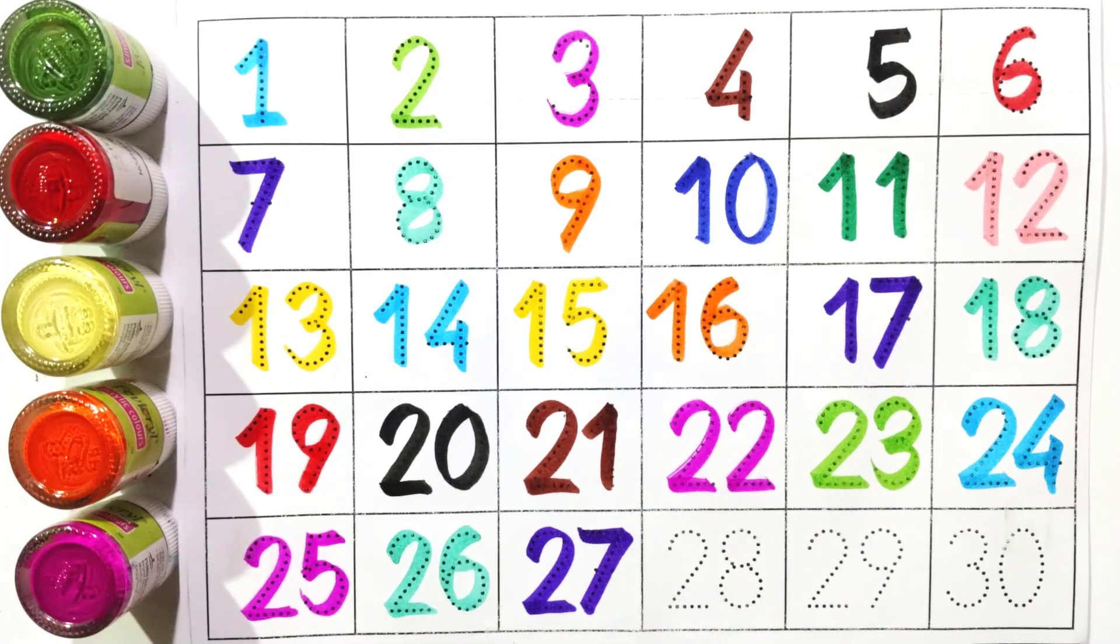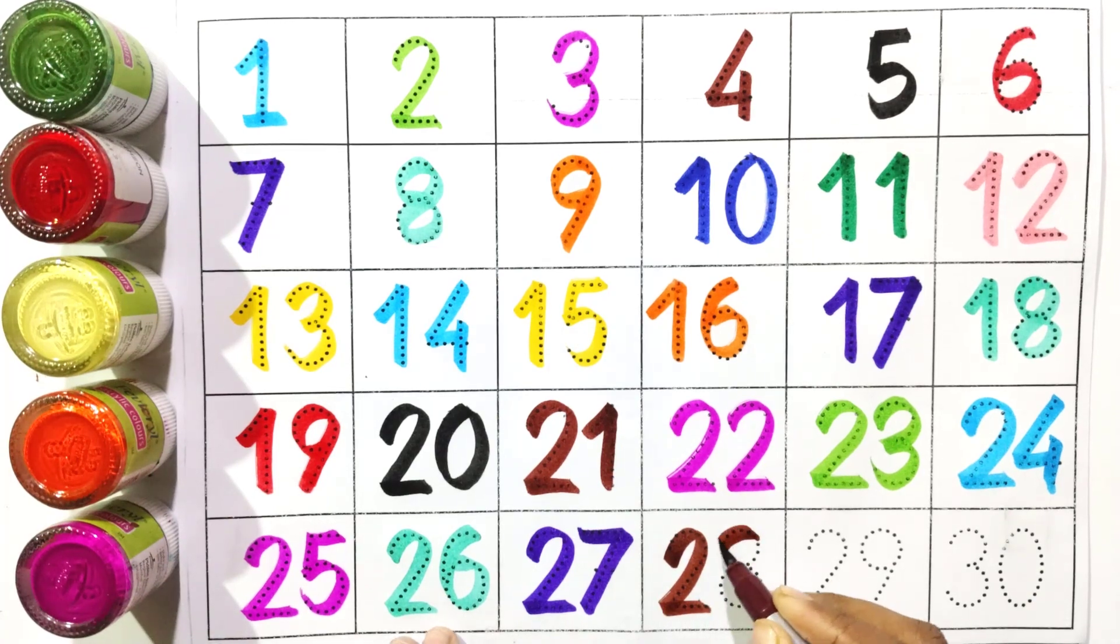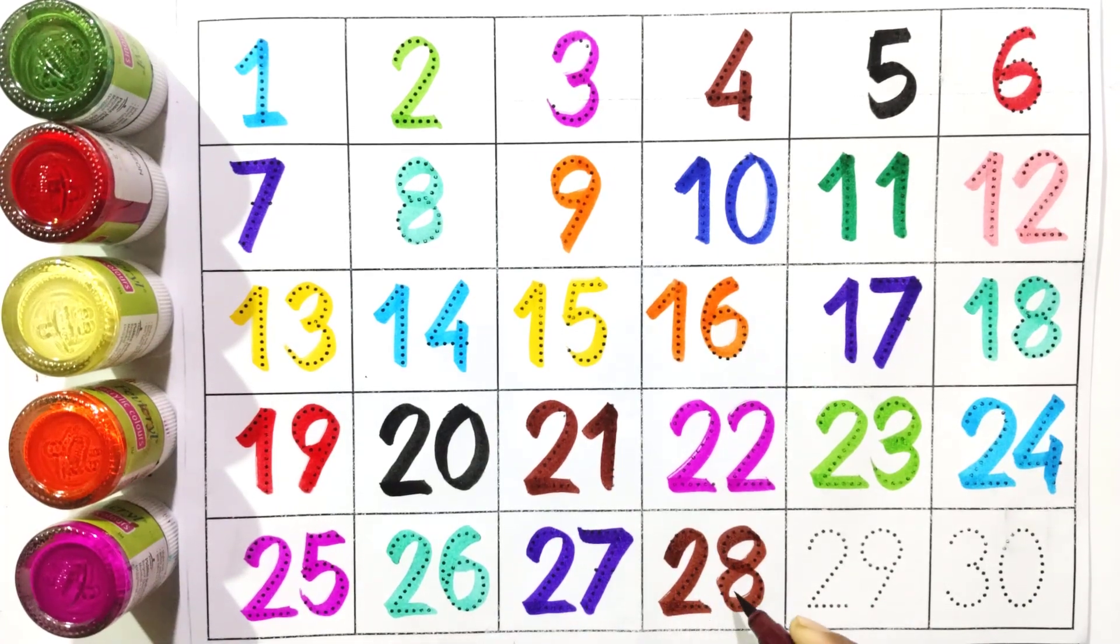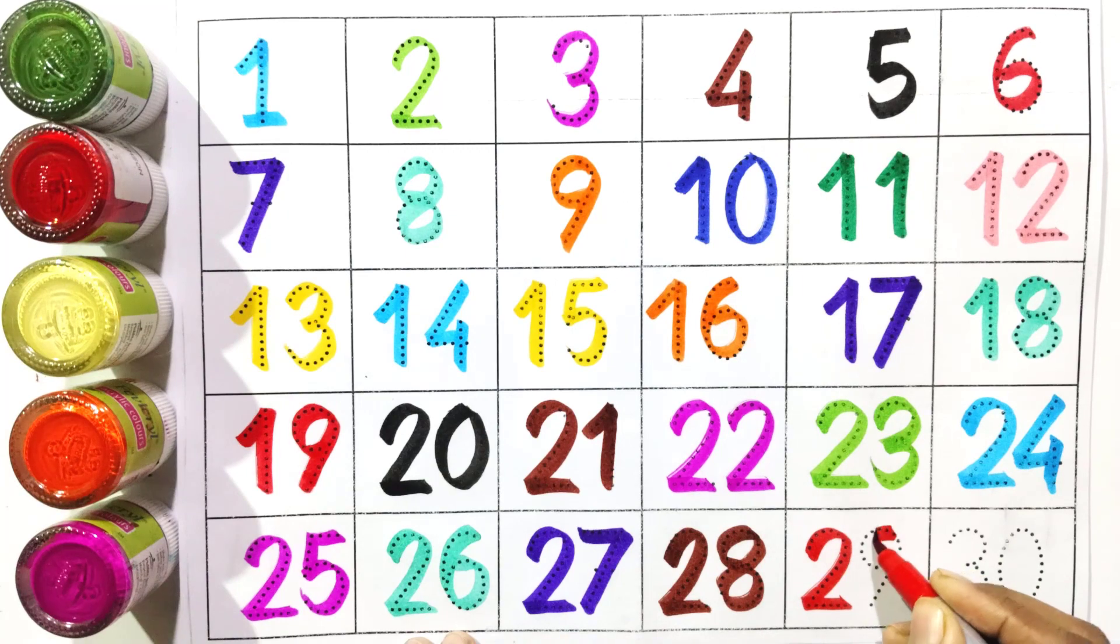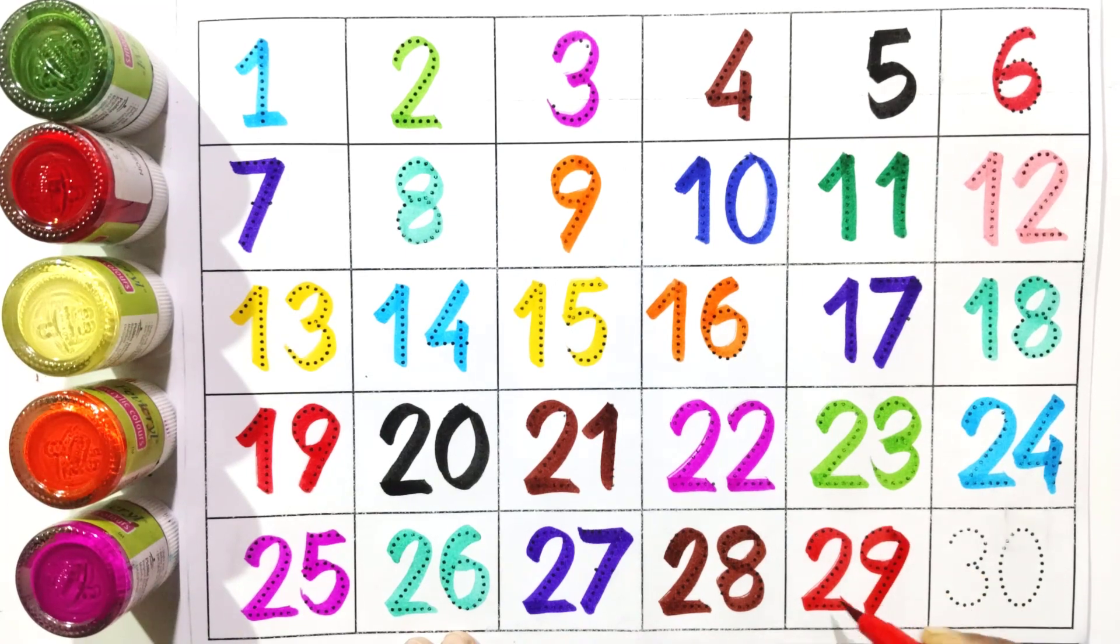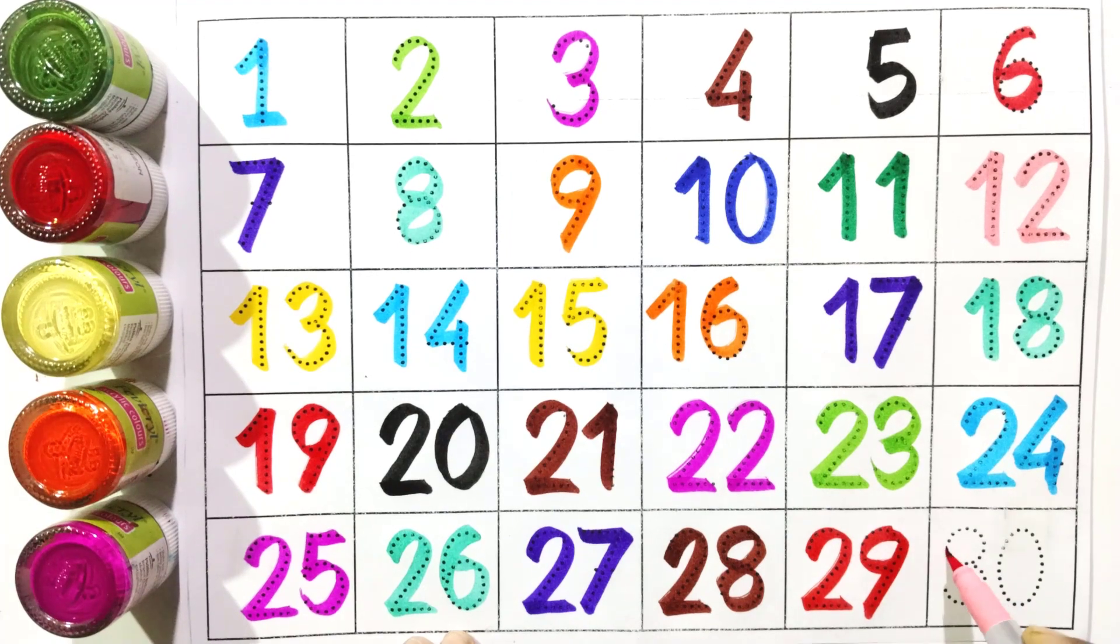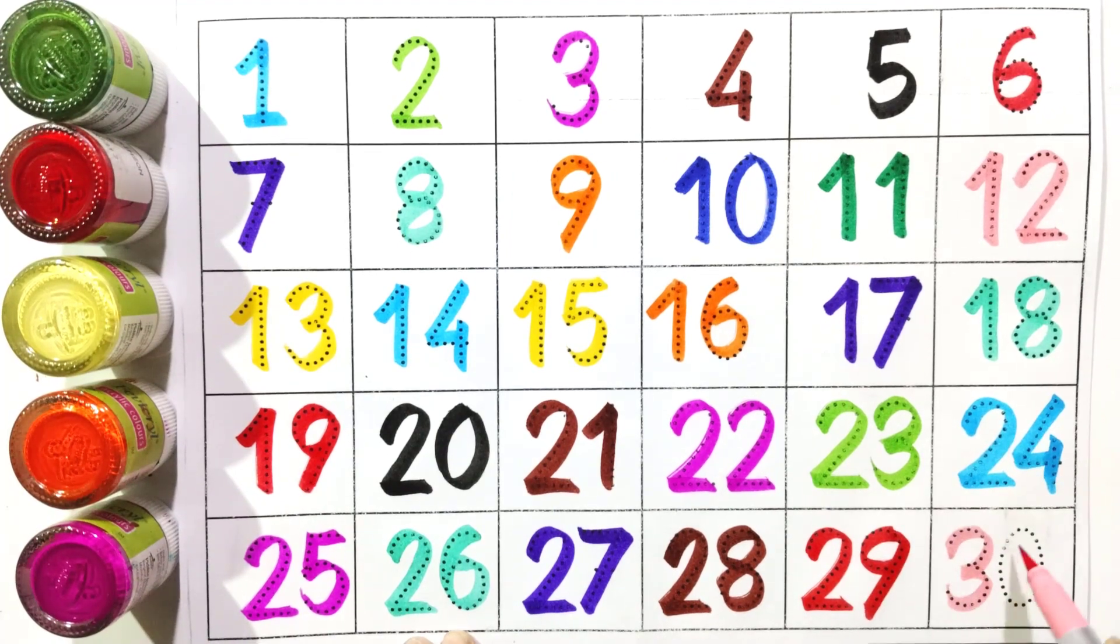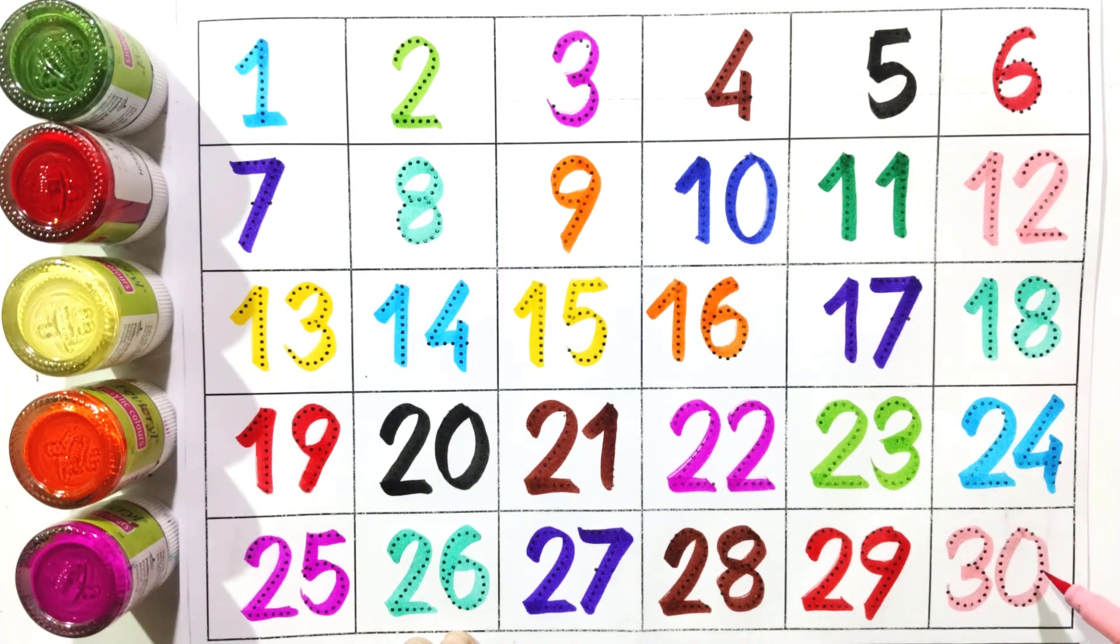Two and eight: twenty-eight, twenty-eight. Two and nine: twenty-nine. Three and zero: thirty.